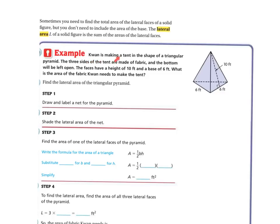For example, Kwan is making a tent in the shape of a triangular pyramid. The three sides of the tent are made of fabric, and the bottom will be left open. Since the bottom is open, you don't count it in the surface area — you only need the three sides. The faces have a height of 10 feet and a base of 6 feet. What is the area of fabric Kwan needs?